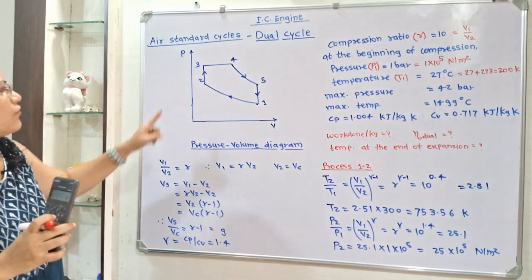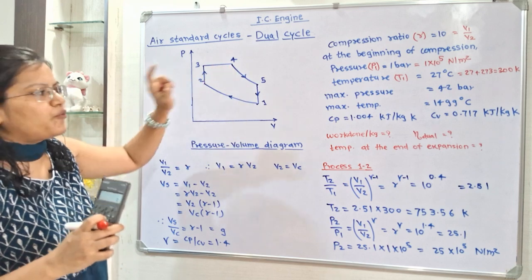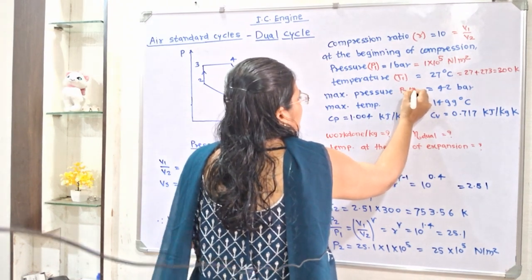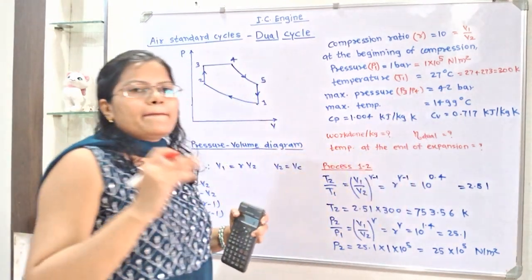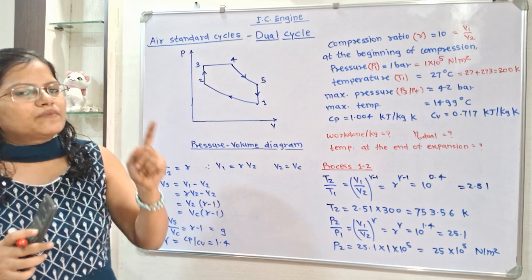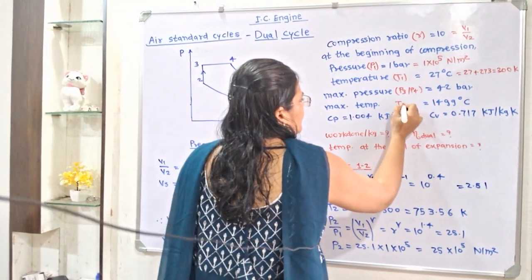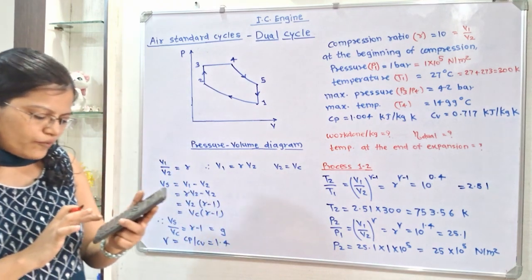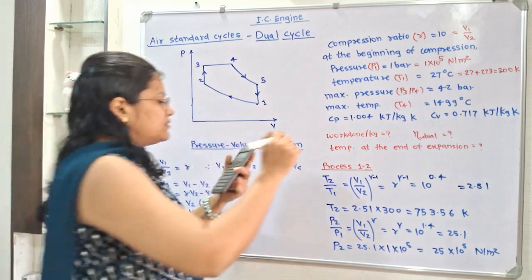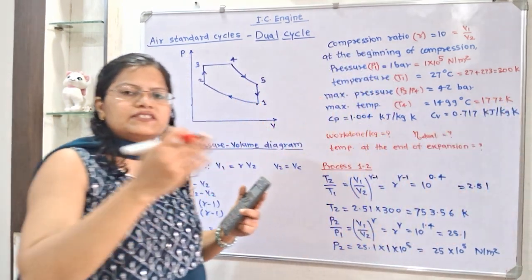Maximum pressure is given. Observing the pressure-volume diagram, maximum pressure occurs at points 3 and 4, so P3 = P4 = 42 bar. For maximum temperature, observing the temperature-entropy diagram of the dual cycle, the maximum temperature is at point 4. So T4 = 1499°C, which converts to 1499 + 273 = 1772 K.